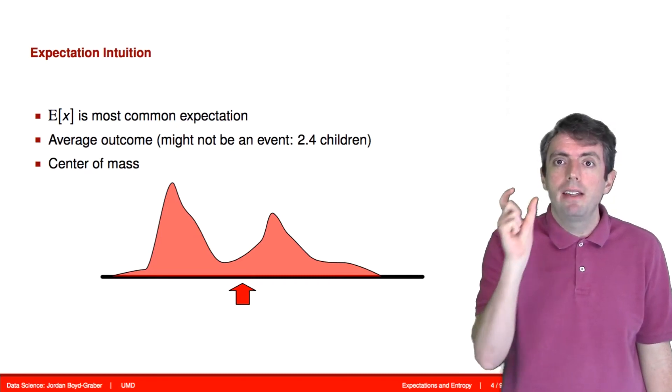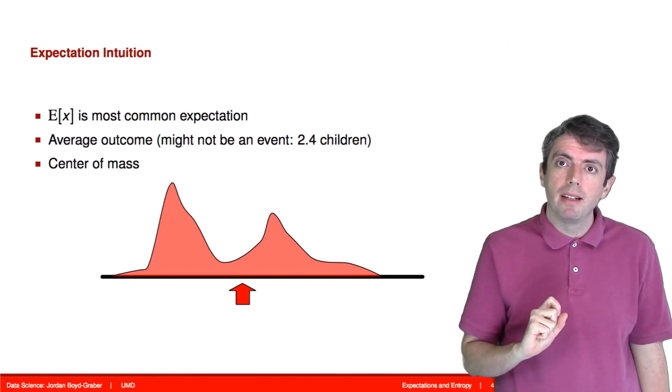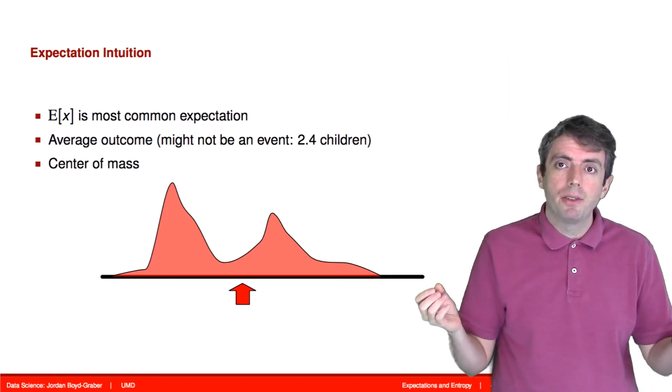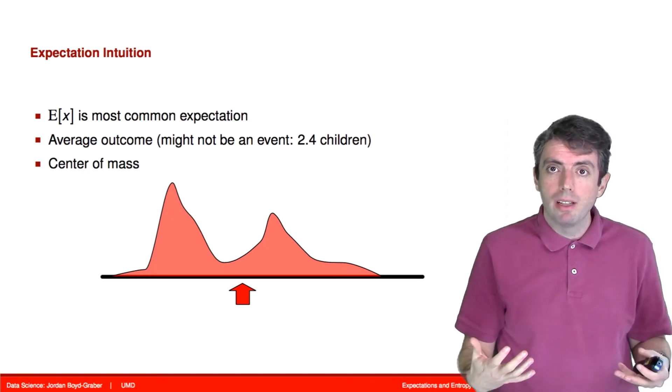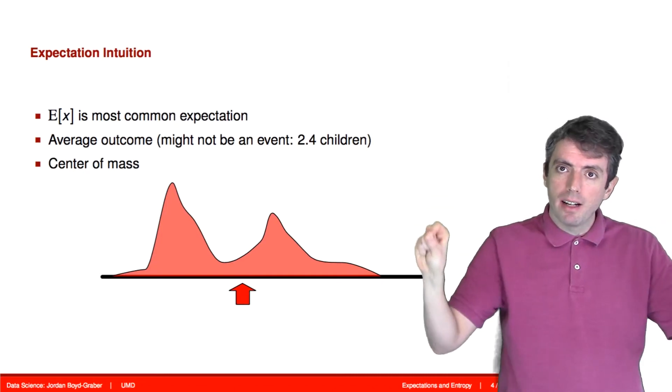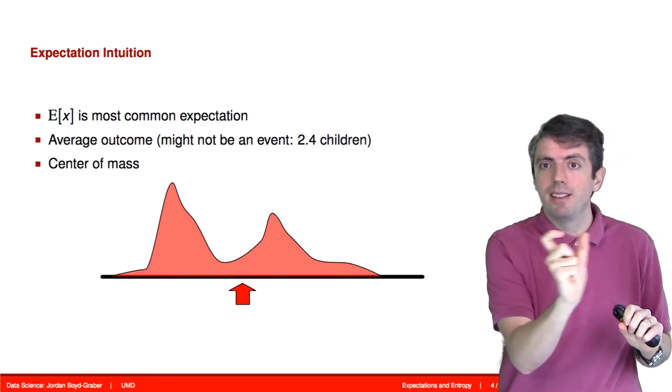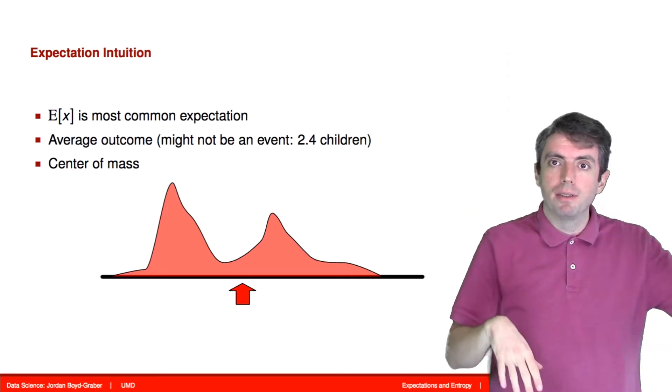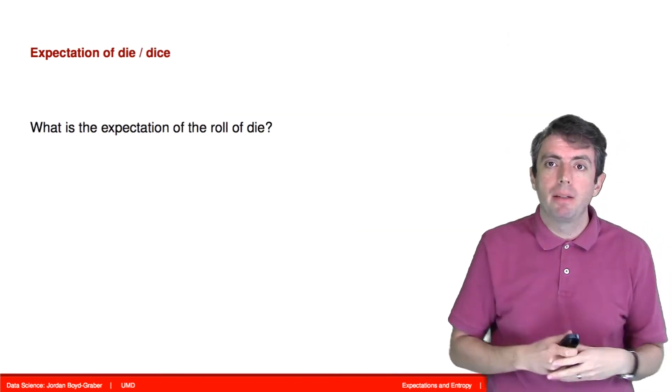Often when people talk about the expected value of a distribution, they're taking an expectation of the identity function. That is, take the value of every random variable that a probability distribution can take on and multiply it by its probability. When you take that expectation, that corresponds to the average value that your distribution will take on, or if you think about it visually as your distribution sitting on a teeter-totter, the expected value is where you could put a fulcrum or pivot so that the probability distribution would balance. You would have as much to the left as you do to the right in terms of probability mass. So let's compute a very simple example.